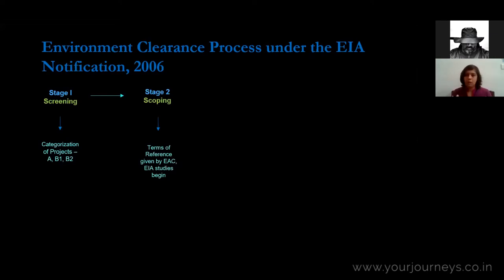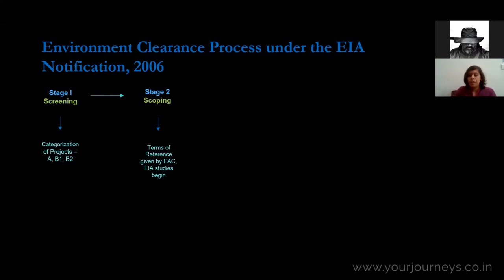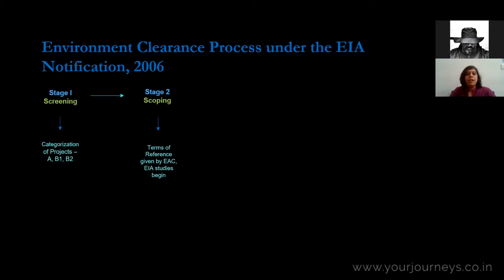The second stage is called scoping. The project proponent submits a form to the Expert Appraisal Committee with details of the project — for example, proposing a mine in Chhattisgarh, specifying the amount of forest land involved, revenue land, and land to be acquired from farmers. The EAC then prescribes something called Terms of Reference, which are broad pointers the project proponent must keep in mind when conducting its Environment Impact Assessment studies.